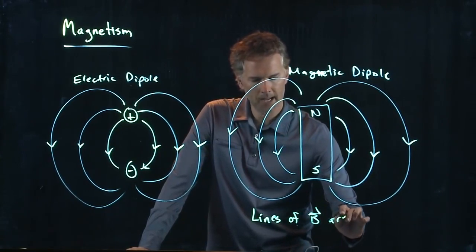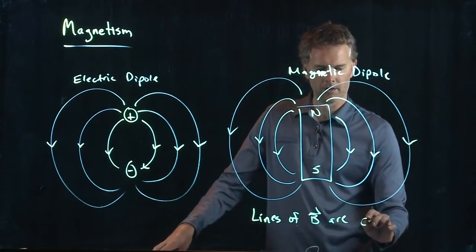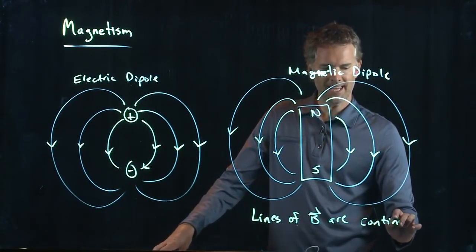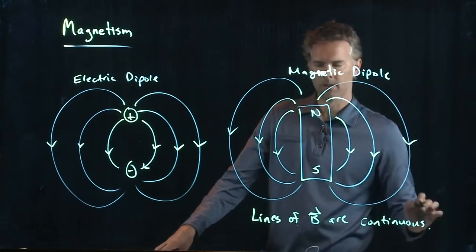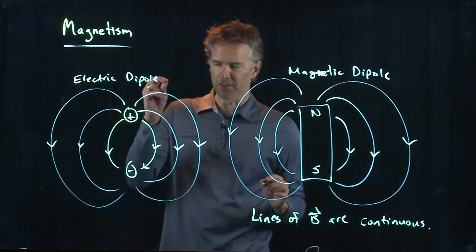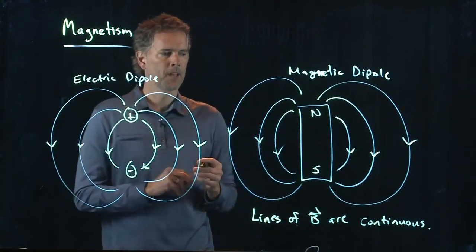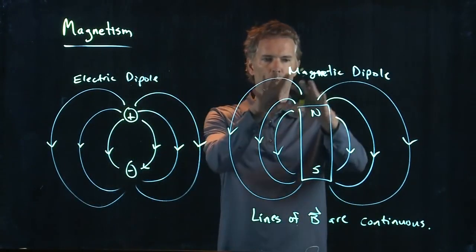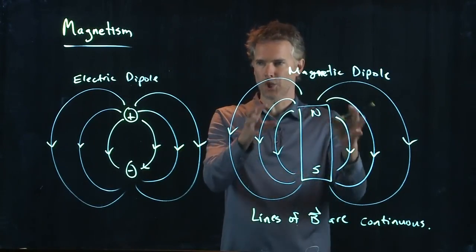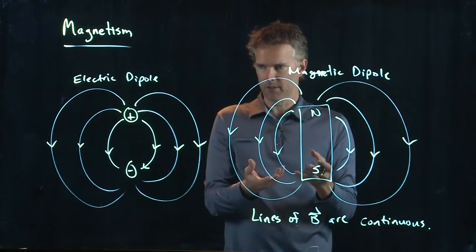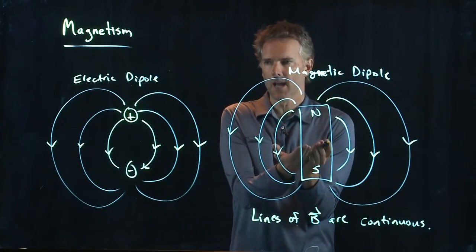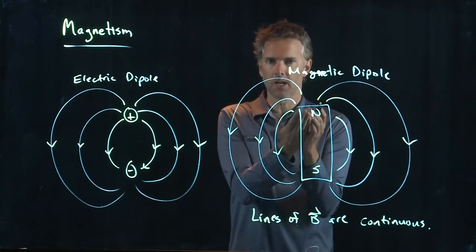They always connect back on themselves. Whereas lines of E do not. They start on positive charge, they end on negative charge. And so now here's the question. What is the direction of the magnetic field inside this thing? Inside the bar magnet?